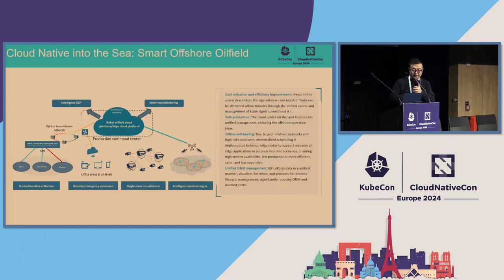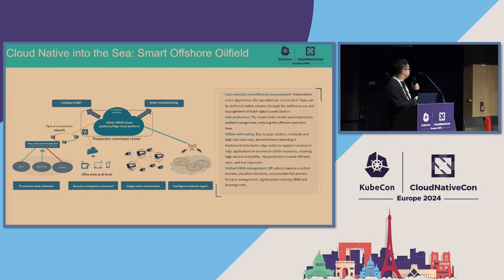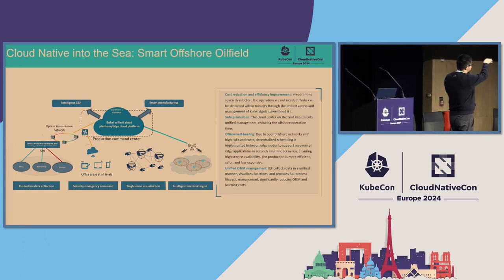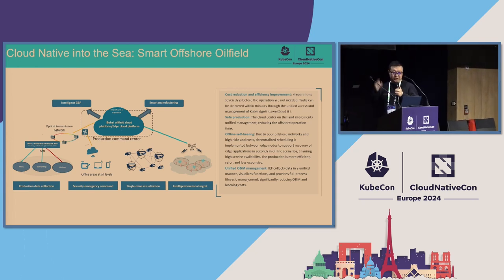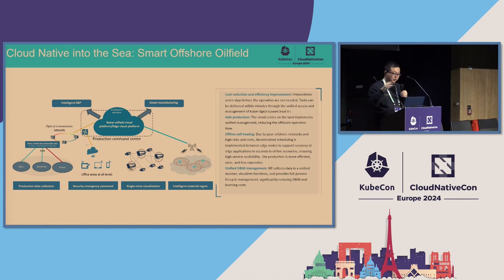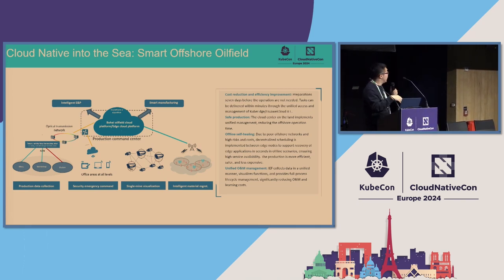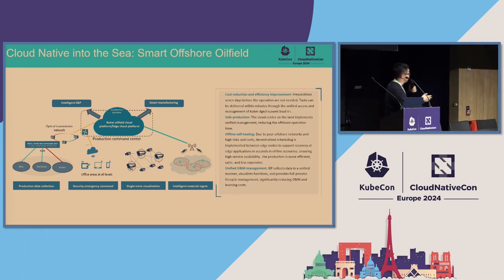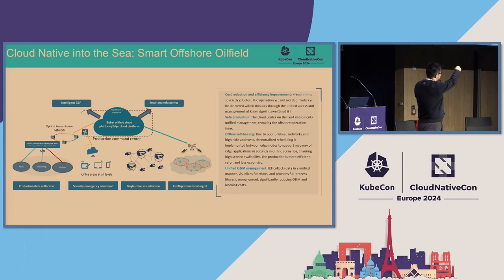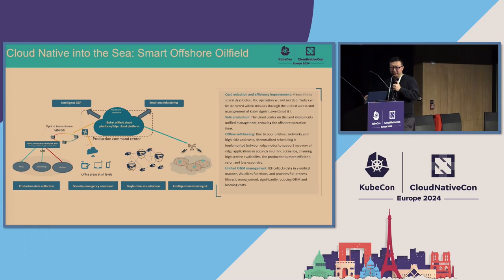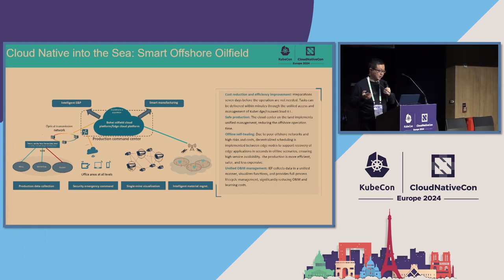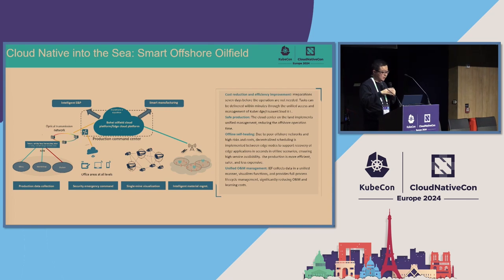Another use case is an offshore oil field. In the sea, there are many edge nodes and edge devices to manage. Users use KubeEdge to manage sensors, cameras, and edge nodes from a central platform. The network between the edge nodes and central platform — wireless or optical transmission — is always unstable, but KubeEdge ensures control commands and data can be delivered to the edge reliably.